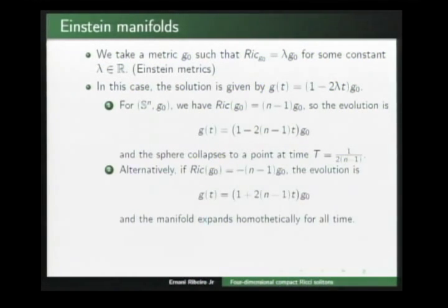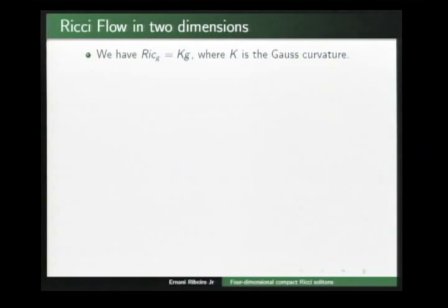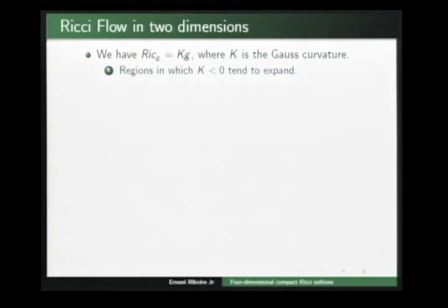If we consider the Ricci curvature equal to −(n−1)g₀, the evolution equation expands, and the manifold expands indefinitely for all time. This is more clear in the two-dimensional case, where we can write the Gauss curvature as Ricci equals Gauss curvature times the metric.